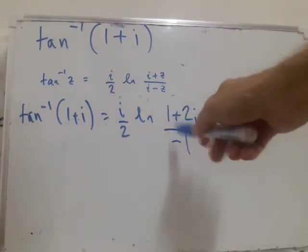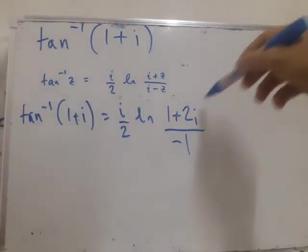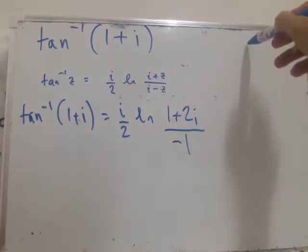We need to work out what the argument of this is. So it's minus 1 minus 2i, so let's be careful about that. Always good to draw a picture, so let's just draw a picture of this complex number.